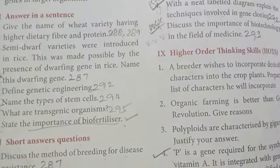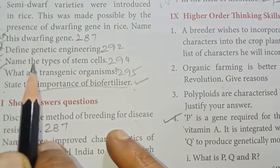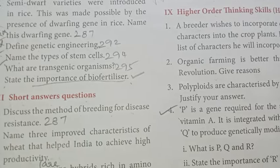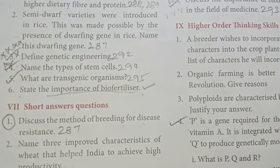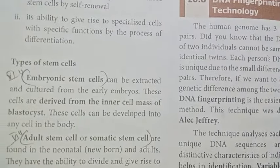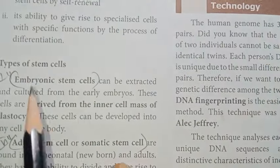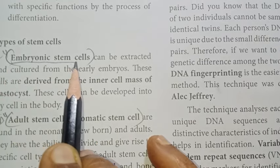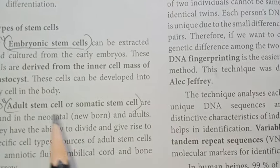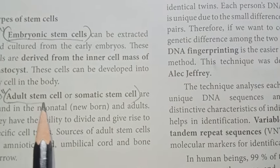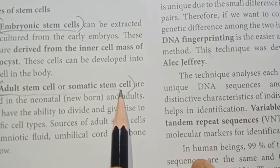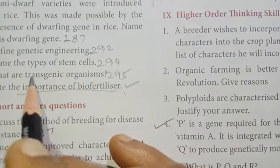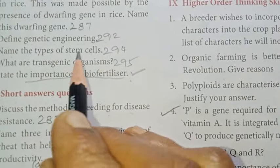Number four: Name the types of stem cells. Page 294. The types of stem cells are: embryonic stem cells, and adult stem cells or somatic stem cells.